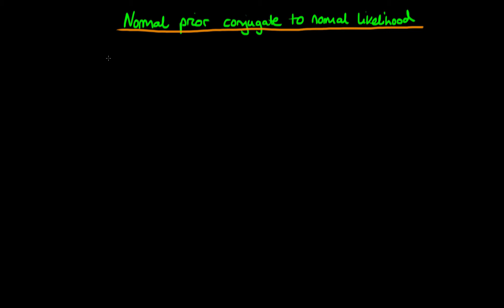In this video I'm going to start off a proof that a normal prior density is actually conjugate to a normal likelihood. The example which we're going to be talking about here is the case where the variance of the likelihood, which I'm calling sigma squared x, is actually known.